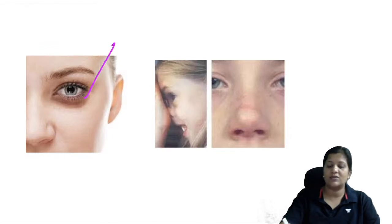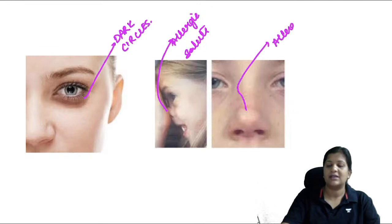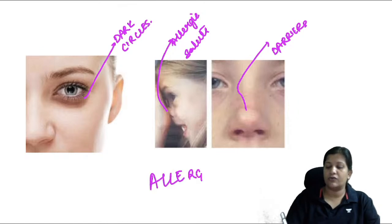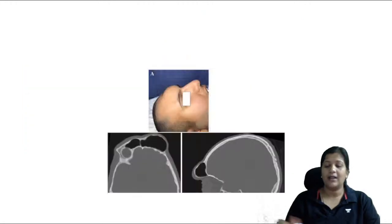This image shows specific signs of allergic rhinitis: dark circles around the eyes, allergic salute, and a dark transverse line on the dorsum of the nose called Diarrhea's line. If you see these signs in an exam image, think allergic rhinitis.